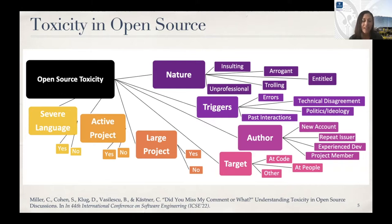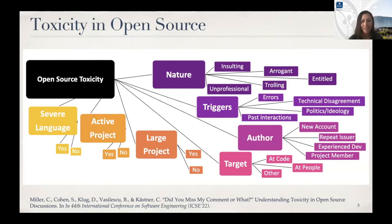Despite the move towards codes of conduct, a study presented at ICSE — the International Conference on Software Engineering — found that toxicity still exists in open source. The study identified toxic comments through various heuristics and found lots of insults, arrogant behavior, and unprofessional behavior. Interestingly, these weren't just from trolls — they came from experienced developers and core team members. Entitled behavior also appeared when people demanded new features or fixes, and the target of toxicity was not just the code but the people involved.